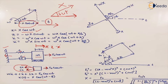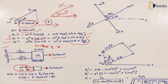Displacement is x cos(ωt) where x is the magnitude. Differentiating to find velocity gives −ωx sin(ωt), which can be written as ωx cos(ωt + π/2). Differentiating again for acceleration gives −ω²x cos(ωt), written as ω²x cos(ωt + π). The third derivative gives ω³x cos(ωt + 3π/2).